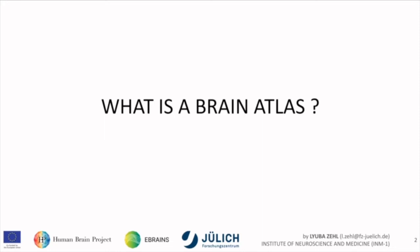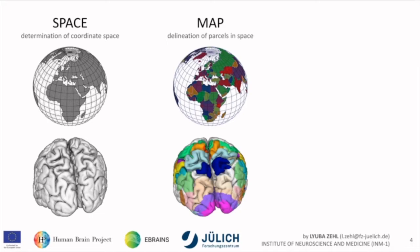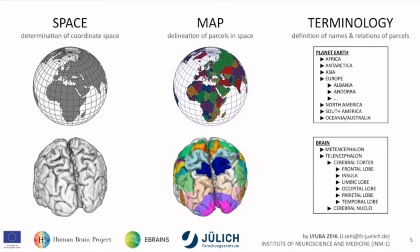What is a brain atlas? In general, an atlas first has to have a space — we need to determine the coordinate space, which we can do for the Earth, but also for the brain. The second thing an atlas has to have is a map — something delineated onto our space, delineation of parcels — which we can do on the Earth but also on the brain.